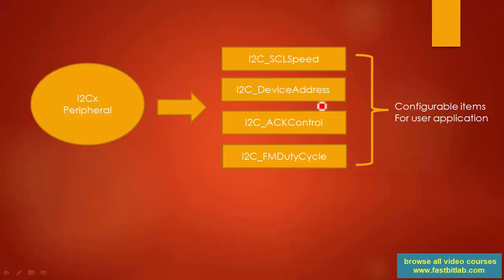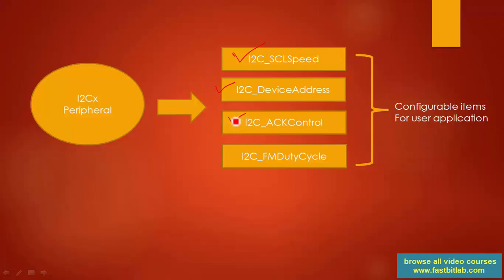What are the configurable items for the user application? In the I2C peripheral, the first configurable item is the SCL speed — the serial clock speed. We will create a configuration structure with a member element for I2C serial clock speed. If the device is acting as a slave, the user also has to mention the own device address. By default in the I2C peripheral, automatic ACKing is disabled, so we'll add a configurable item for enabling or disabling ACK.